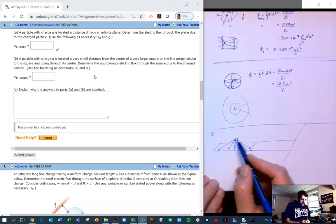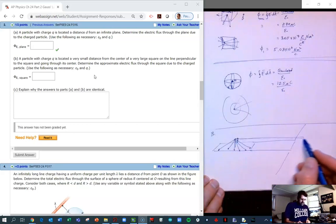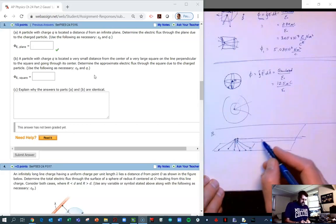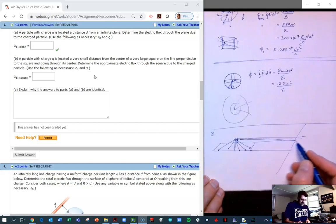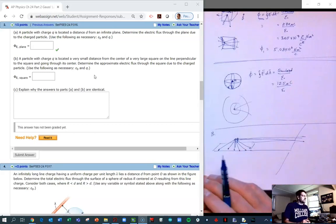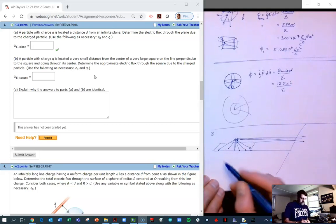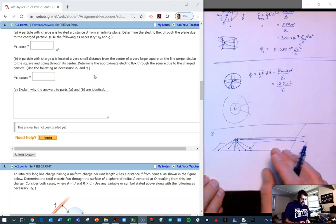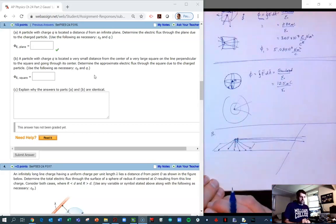Except for the ones that are coming out completely horizontally, all of the field lines that come out, anything below the horizontal, is going to eventually hit the plane. It's going to eventually go through the plane.